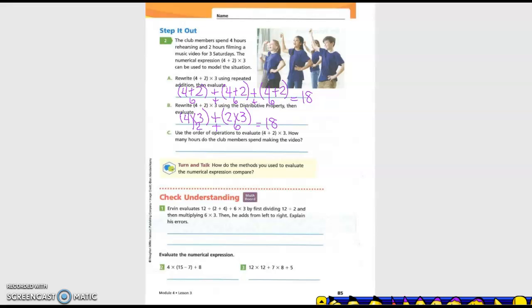So this one, A, we just did repeated addition. B, we did distributive property. So distributive property is where you plug it through, right? Okay. So use the order of operations to evaluate 4 plus 2 times 3. How many hours do the club members spend making the video? So according to order of operations, you do what first? Parentheses first. So 4 plus 2 is 6, 6 and then times 3 equals 18. So what's our label? 18 hours.